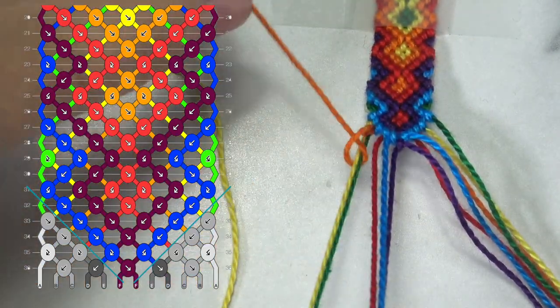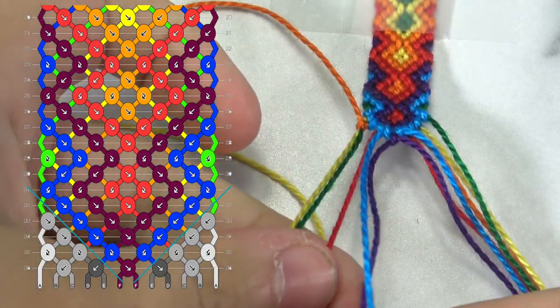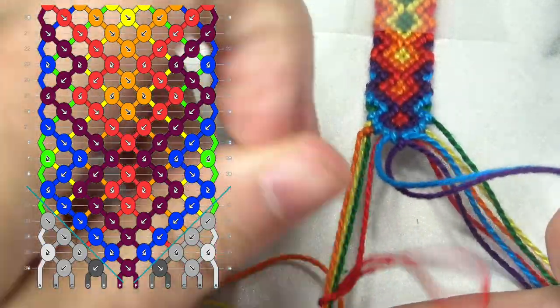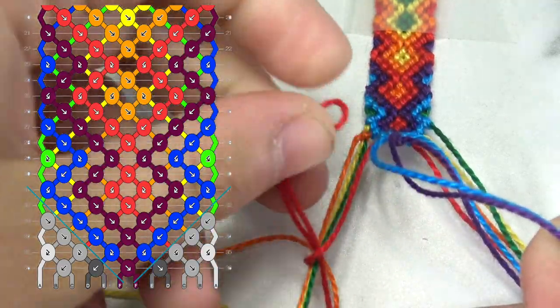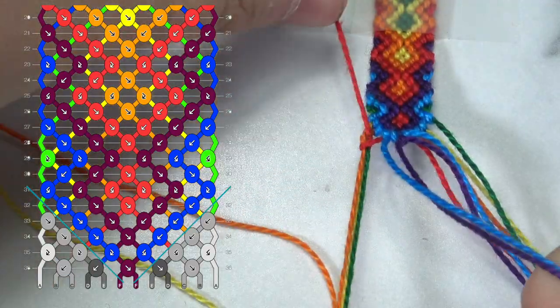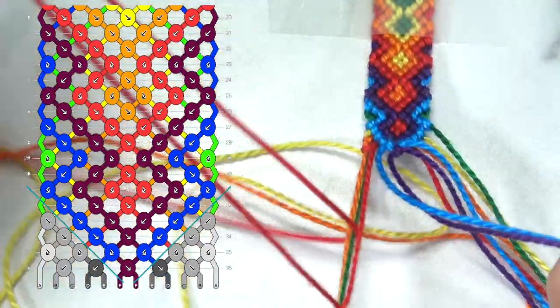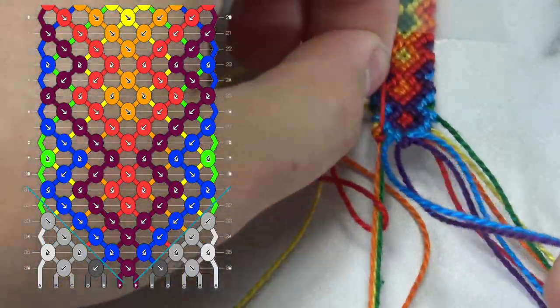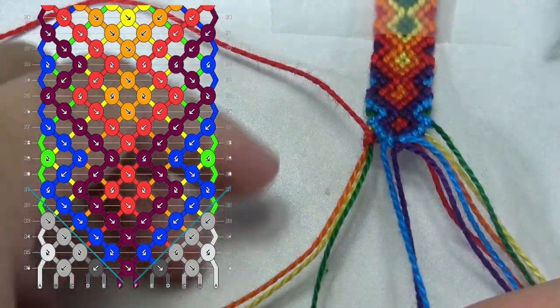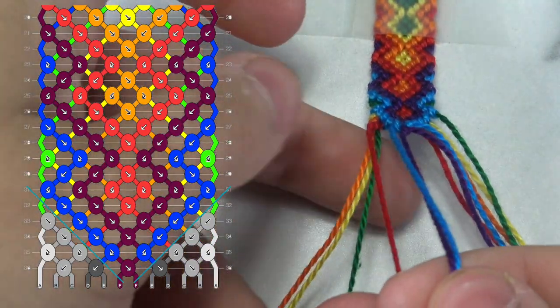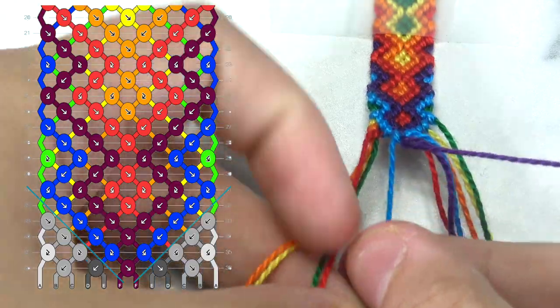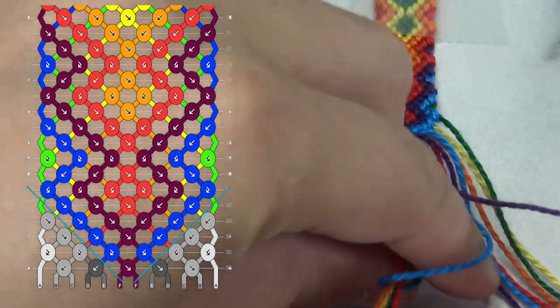Now we're going to go ahead, take our red string, same idea, backwards loop with all the previous colors two times. Moving one string after the next, and soon you'll make it to the middle.